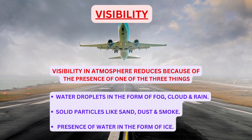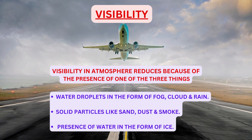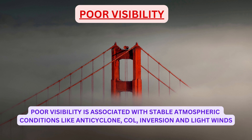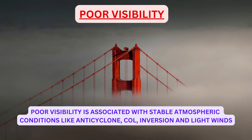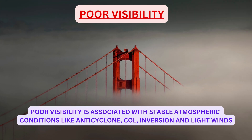Visibility reduces due to one of three things: first, water droplets in the form of fog, cloud, and rain; second, solid particles like sand, dust, or smoke; and third, the presence of water in the form of ice. Poor visibility is associated with stable atmospheric conditions like anticyclone, cold inversion, and light winds.